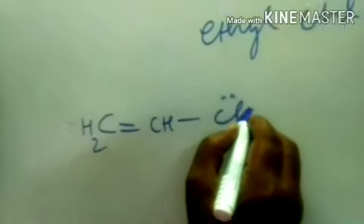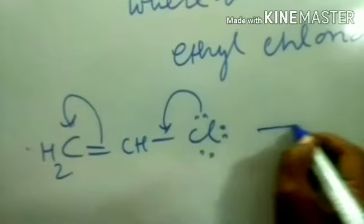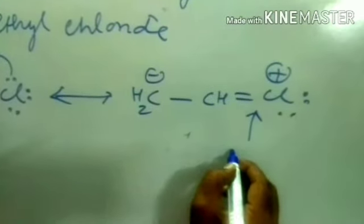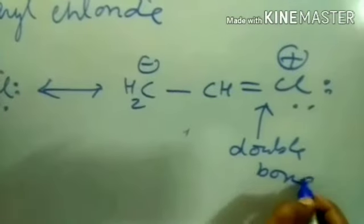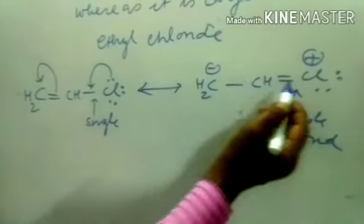This is vinyl chloride — a conjugated molecule. It undergoes resonance, generating resonating structures. This double bond gains partial double bond character, whereas the C-Cl bond is single but resonance is effective, so the bond length is between single and double.